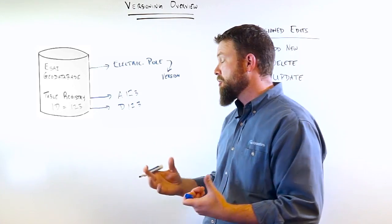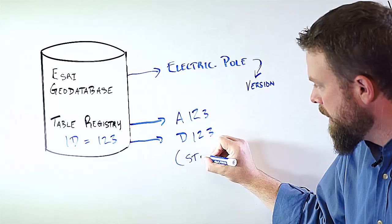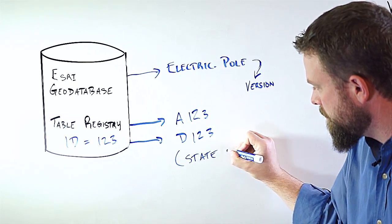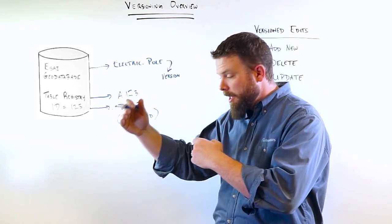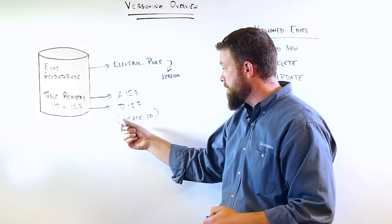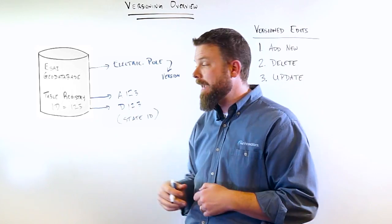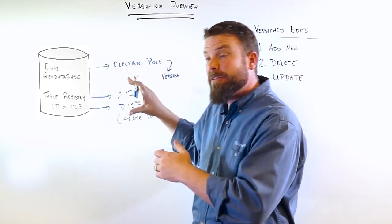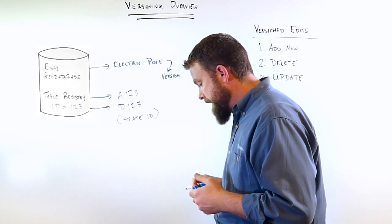Now, in versioning, the concept of versioning really runs heavily off of a thing called the state ID. The state ID is used to really manage edits through time. So, it's very important and each of these tables uses that state ID as new records are added to it. So, this is the foundation of versioning here using the registration ID and the A and D tables.